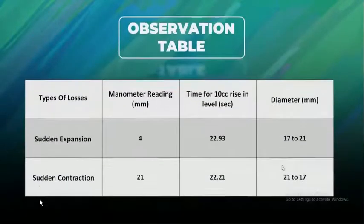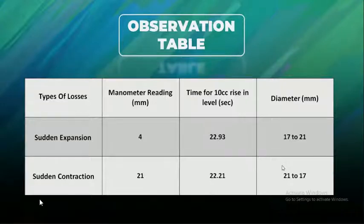Now further calculations will be explained by Arush. The first column tells manometer readings in the two cases of sudden expansion and sudden contraction. Next column records the time of these two cases for 10 cm rise of water level in collecting tank. The last column indicates the diameter of pipes during sudden contraction and sudden expansion of flow.